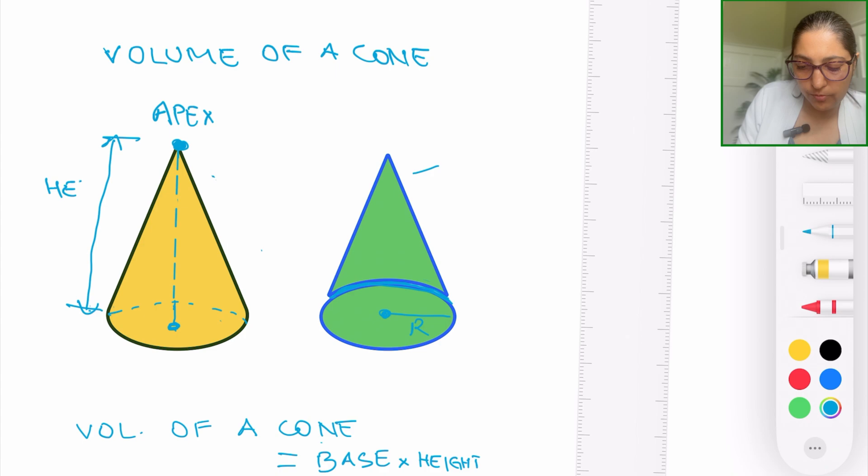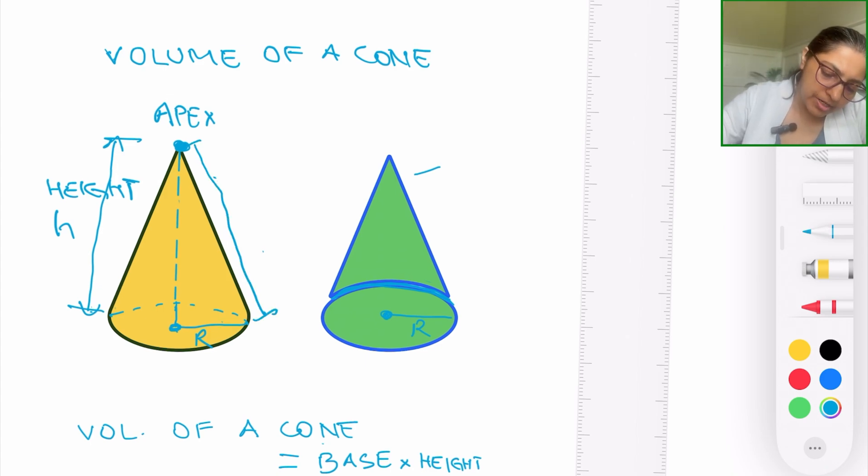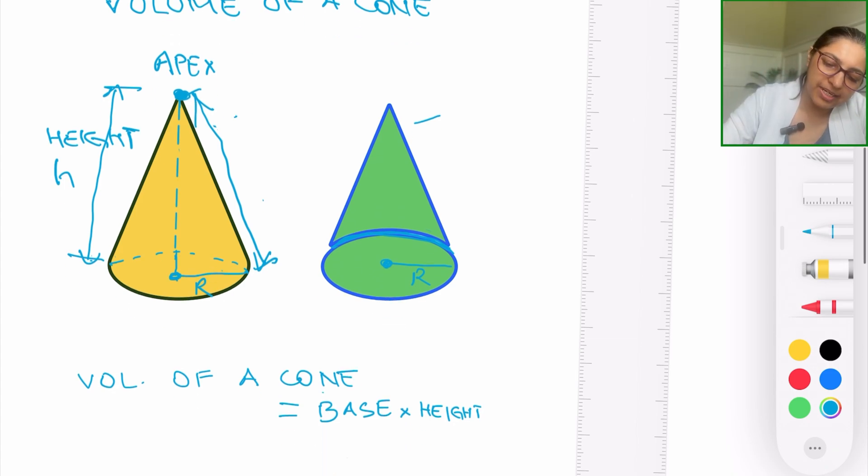Now there's another specific dimension that we learn about in cones, which is called the slant height, which comes in handy when we talk about surface areas or total surface areas, etc. So this kind of like a slope here, the curve, the bent, the incline on the cone, that is called a slant. So these are the basic dimensions of the shape of the cone.